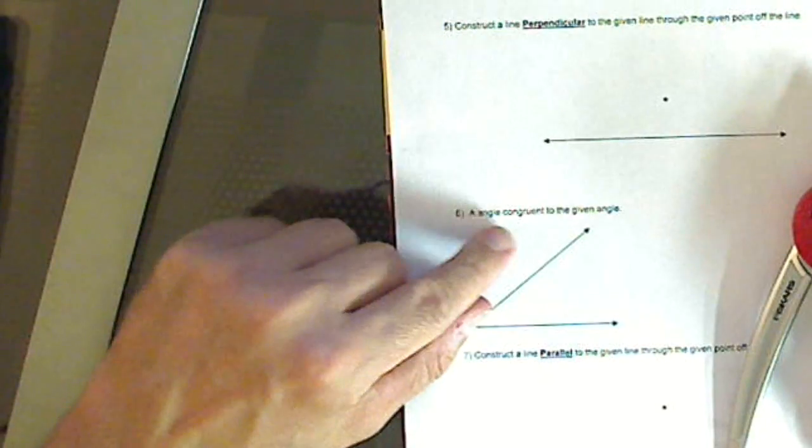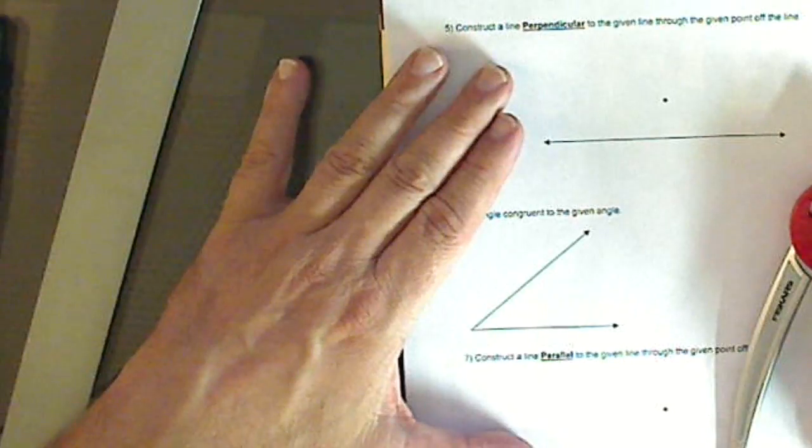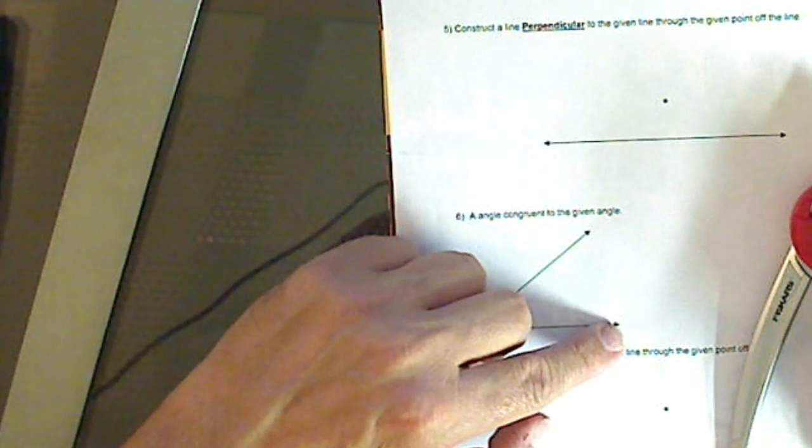We're going to now construct a congruent angle. Now, remember, definitions are so important. An angle are two rays that share a vertex. A vertex is a point, and a ray starts at a point and goes on forever.